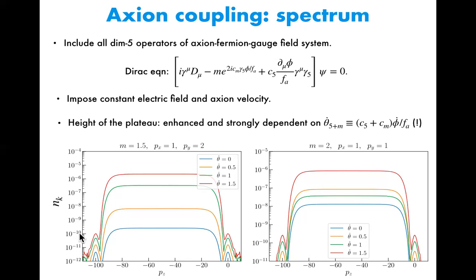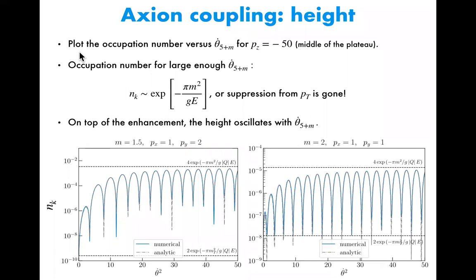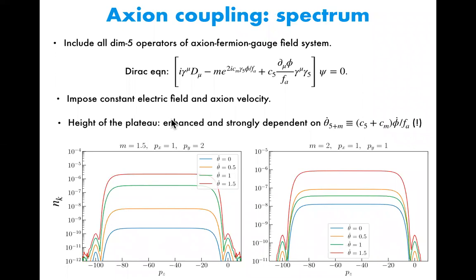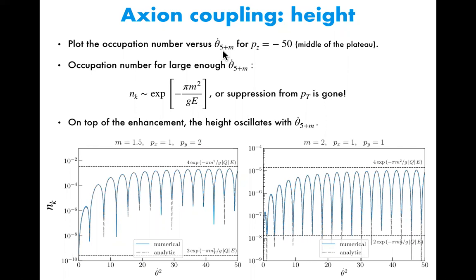For instance, in this case the occupation number goes from 10 to the minus 10 up to 10 to the minus 6, so the enhancement is really huge. We call this kind of enhancement the axion-assisted Schwinger effect. Sometimes it is not even a monotonic function of the axion velocity. To take a closer look at what is going on with the height, I plot the occupation number versus the axion velocity by fixing P_z to a specific value.